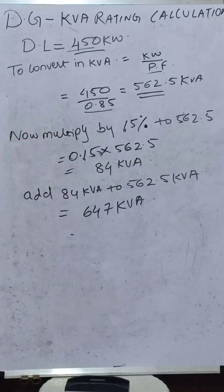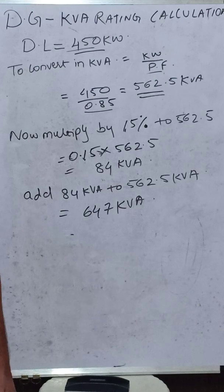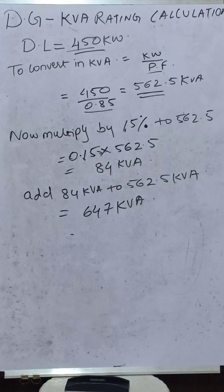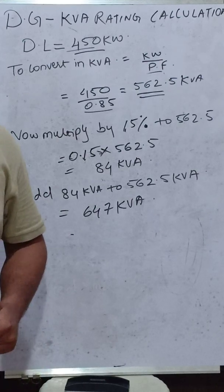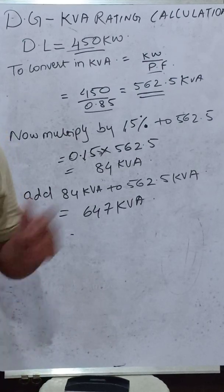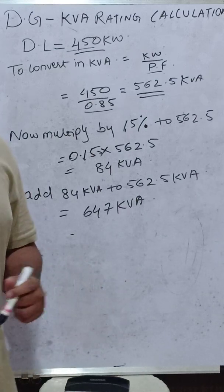The funda remains same. Why we are multiplying by 15%? Within that 15%, 7 to 8% will constitute for the losses, that is nothing but copper and no load losses, hysteresis and eddy current losses. And the remaining percentage will act as a buffer. So, in case if any load is increased in the future, even then the DG will have the capacity to feed that load.